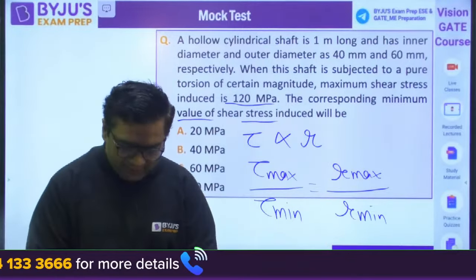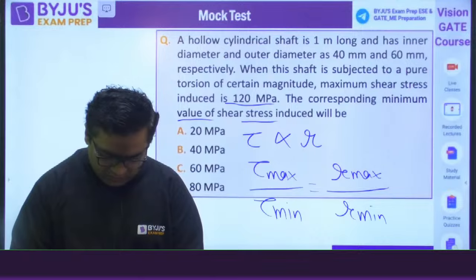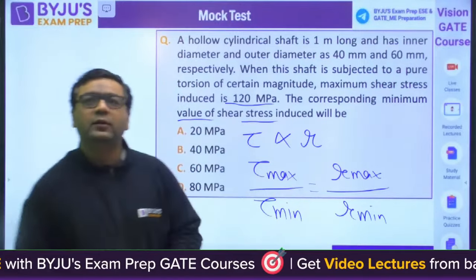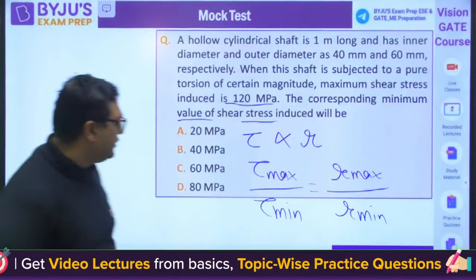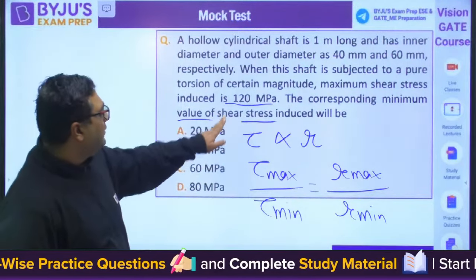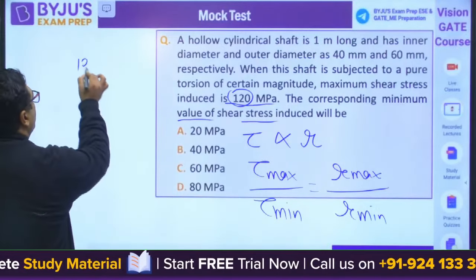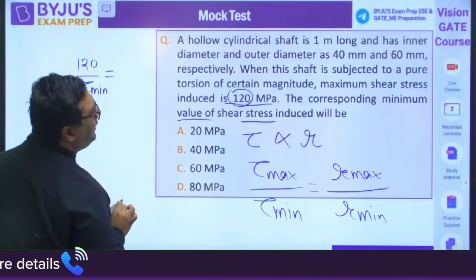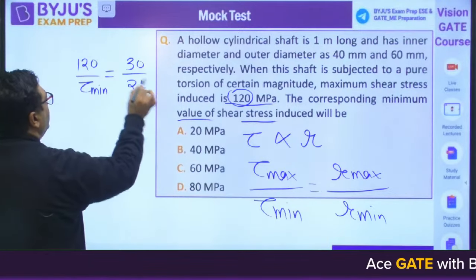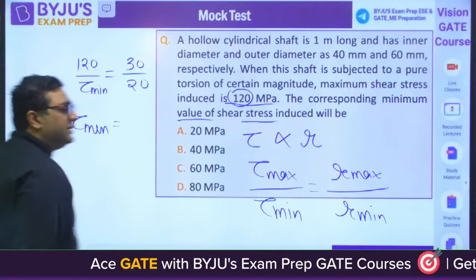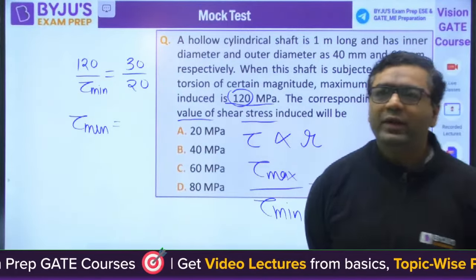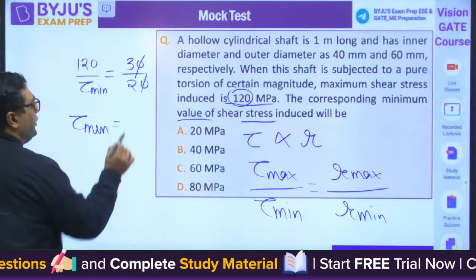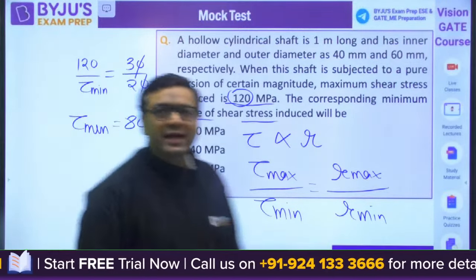Tell me the answer for this question. You are given that maximum shear stress is 120. You need to find out minimum shear stress. Maximum diameter is 60, so the ratio is 30 by 20. The answer comes out to be 80 MPa — the zeros cancel out. So the answer for this is D, 80 MPa.